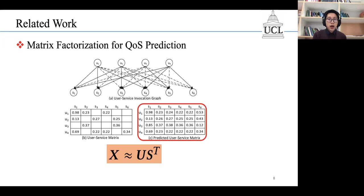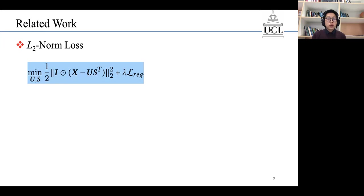So, the question is, how can we measure the difference between X and US transpose? The most popular approach is to apply L2 loss to measure the difference between X and US transpose. And then, we can construct this objective function.